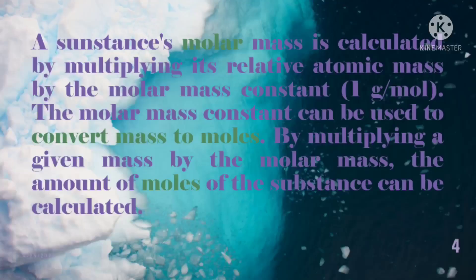And let's get back to our previous session or discussion where we able to get the molar mass and it's calculated by multiplying its relative atomic mass by the molar mass constant equal to 1 gram per mole. The molar mass constant can be used to convert mass to moles. By multiplying a given mass by the molar mass, the amount of moles of the substance can be calculated.